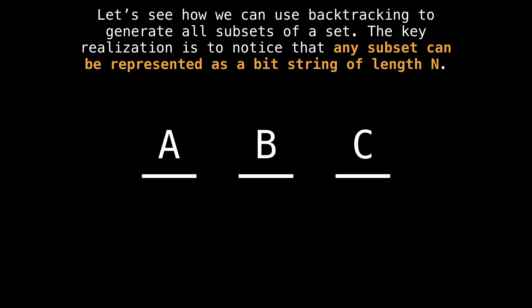Now let's talk about how we're going to use backtracking to generate the power set. A key realization we have to make is that each subset of the power set can be represented as a bit string of length n. By a bit string, I mean a sequence of ones and zeros.